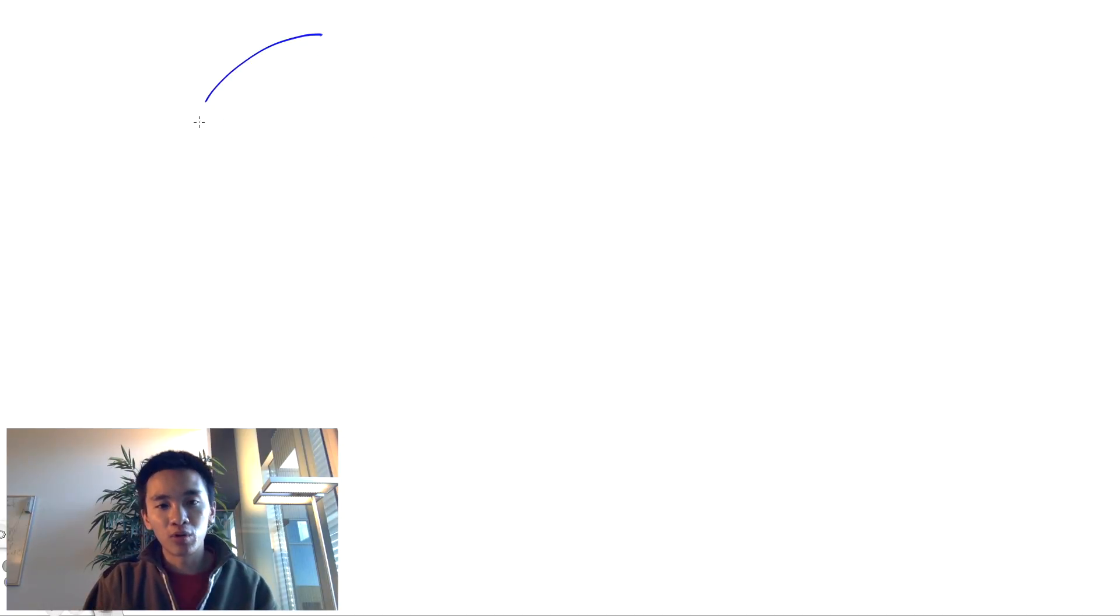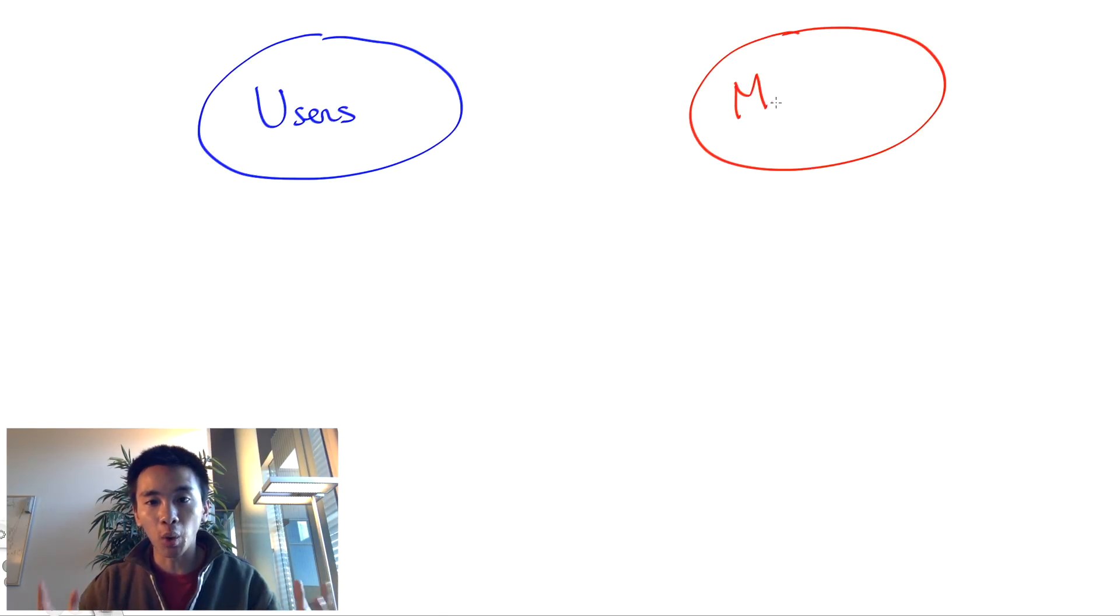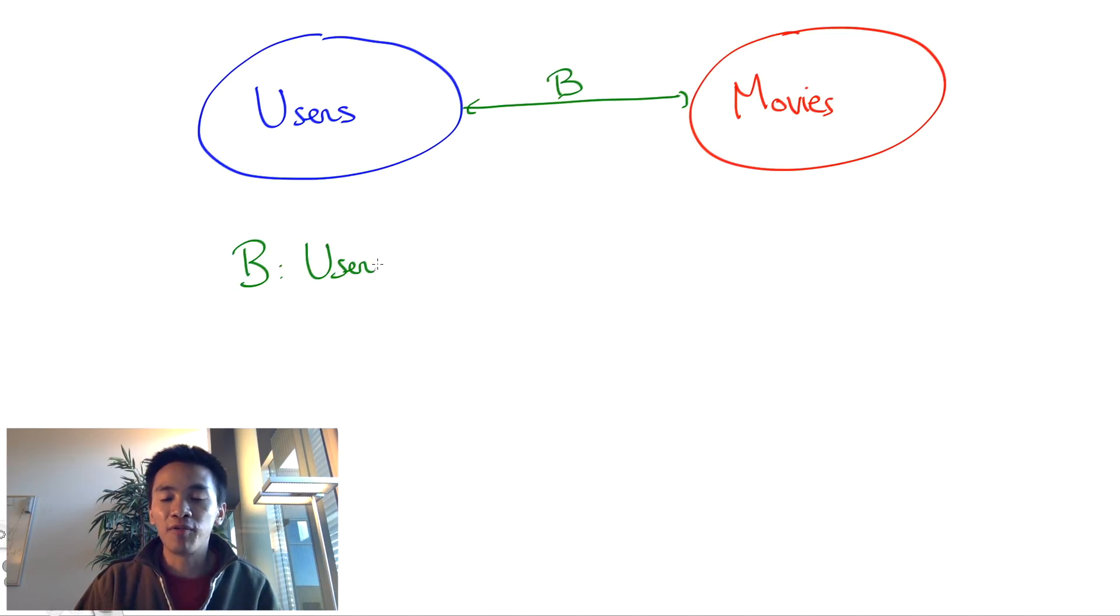Namely, SVD actually boils down to finding the easiest way to interpret a bilinear form B from a vector space of users times a vector space of movies into the set of real numbers.